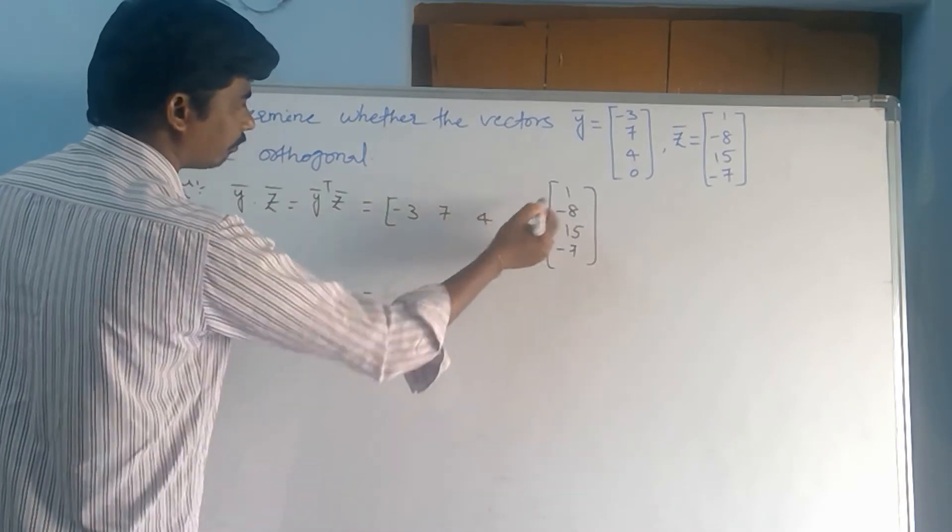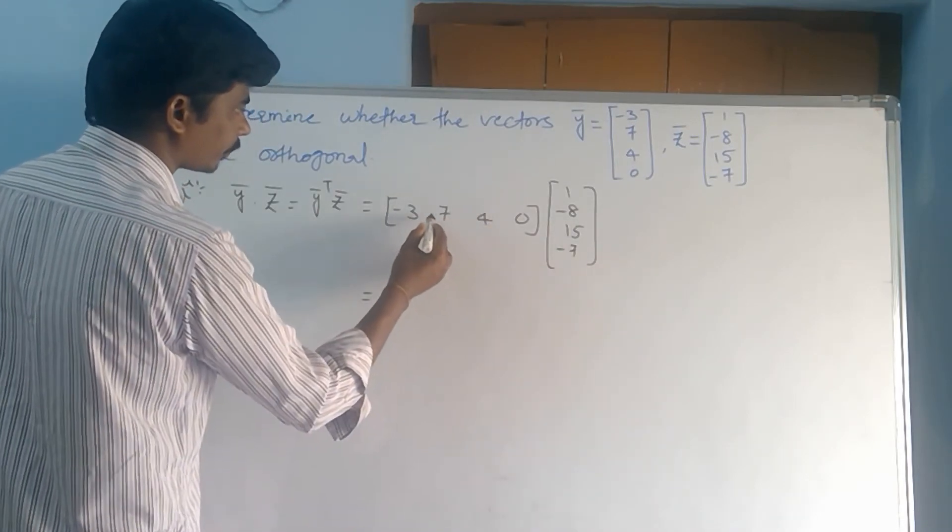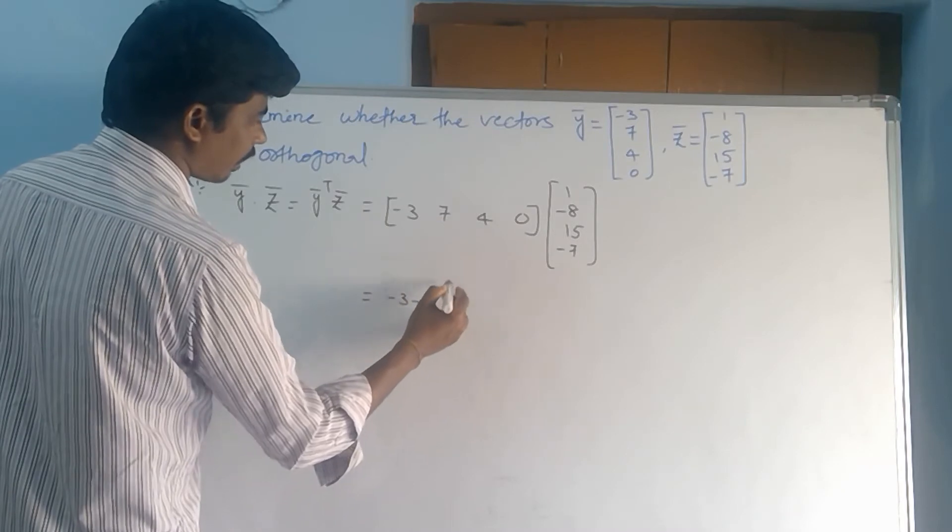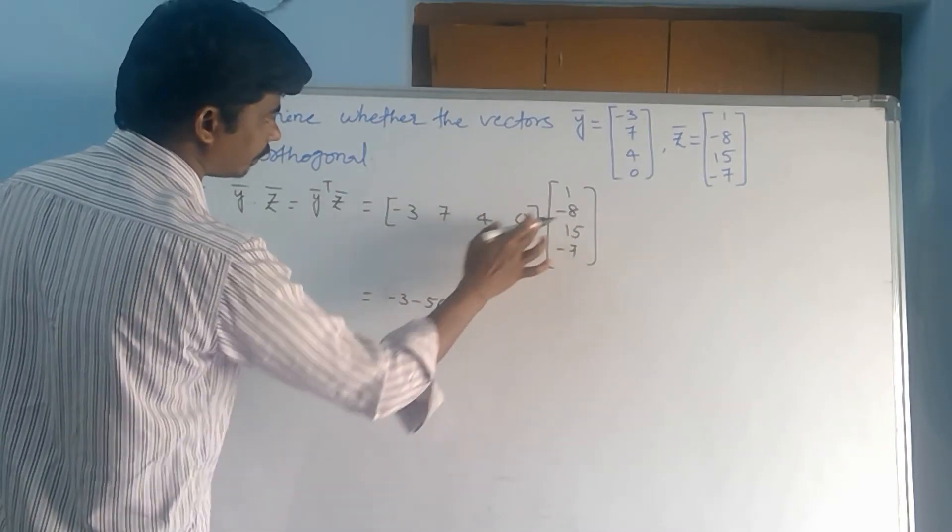Right. That equals, see, minus 3, minus 3, minus 56. 7, 8 are equal to 56.